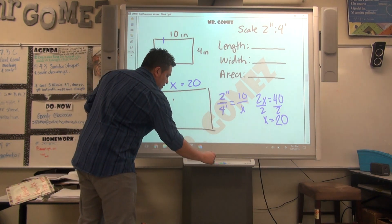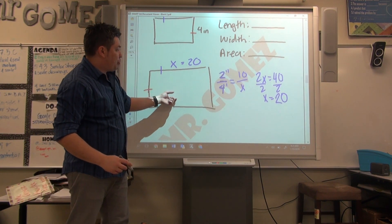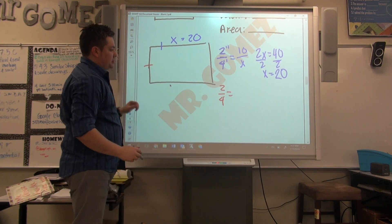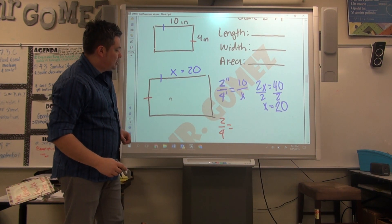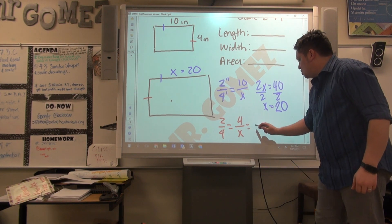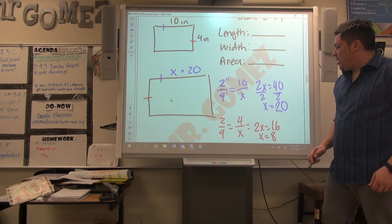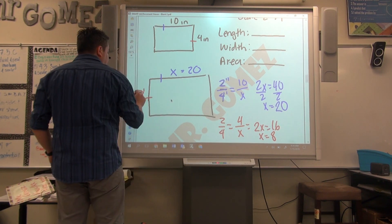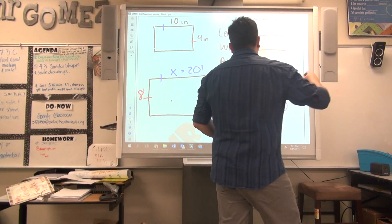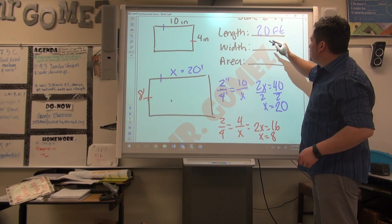Now to find the width, which is going to be the 4, you can set up your proportion as well. You're going to have 2 to 4 equals to what? What is given to me, the inches or the feet? Inches. So I'm putting the 4 right here on top and x on the bottom. You're going to have 2x equals 16, and when you divide by 2, you get 8. So my width is 8 feet.